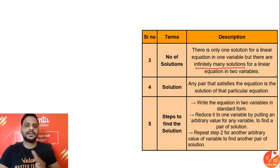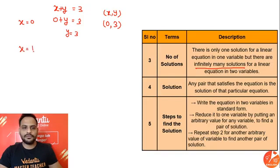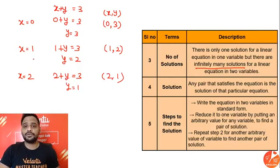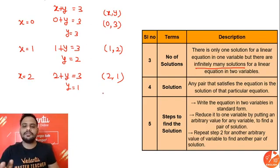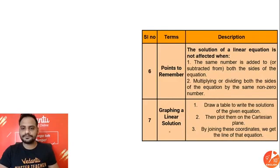There are infinitely many solutions for a linear equation in two variables. For example, in x + y = 3: putting x = 0 gives y = 3, giving the solution (0, 3); putting x = 1 gives y = 2, giving (1, 2); putting x = 2 gives y = 1, giving (2, 1). Since x can take infinitely many values, there are infinitely many solutions. When plotted on a graph, these solutions form a straight line.